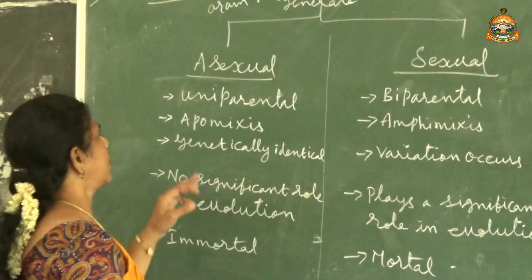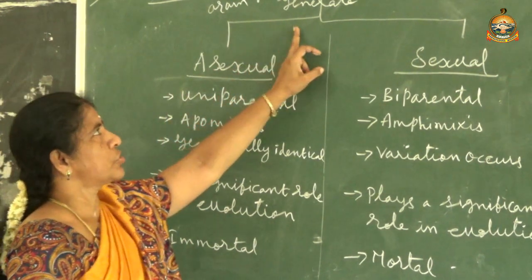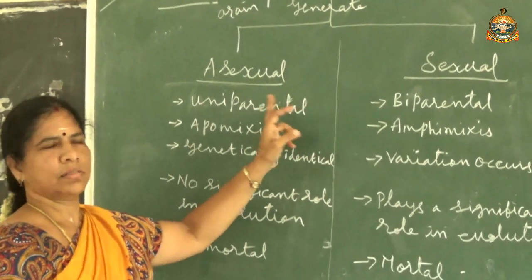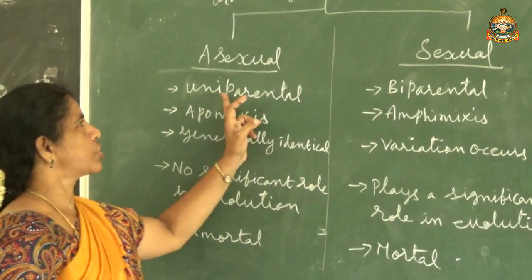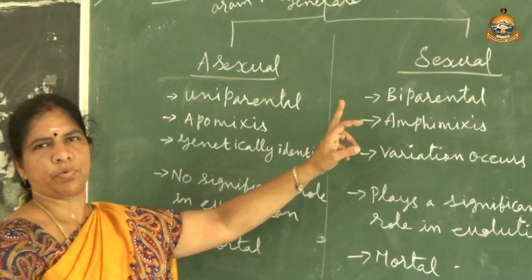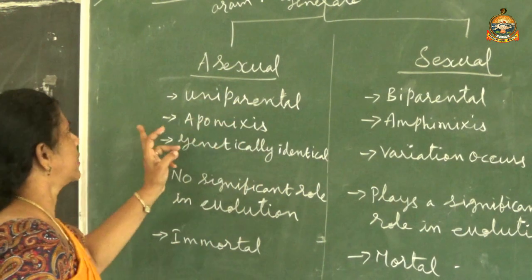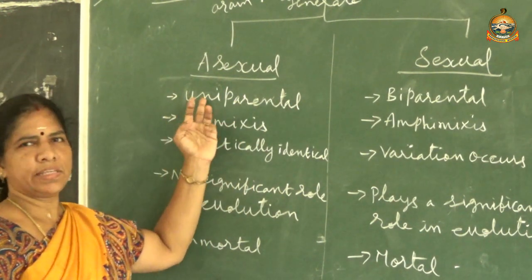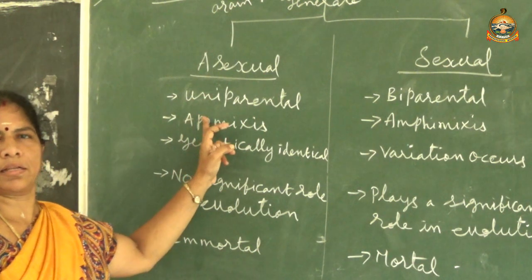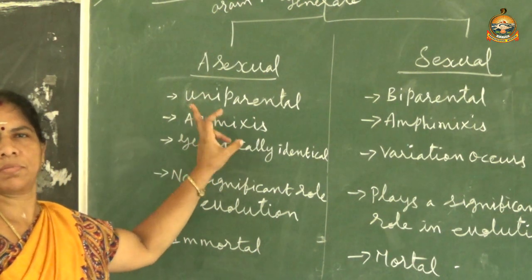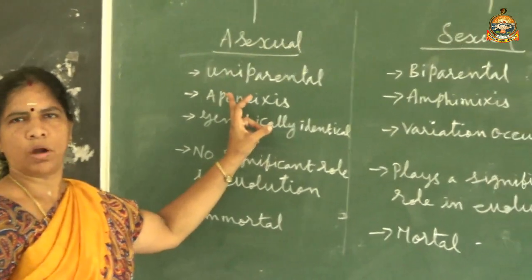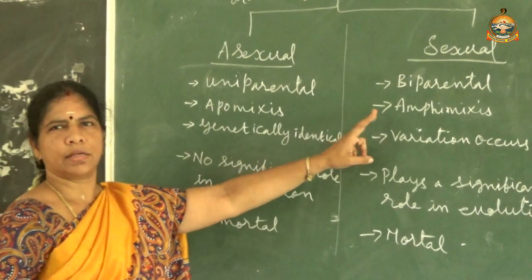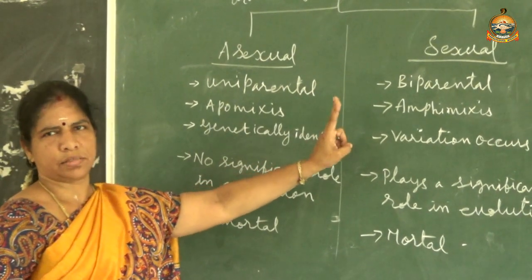Reproduction is divided into two categories: asexual reproduction and sexual reproduction. In asexual reproduction, it is uniparental - meaning a single parent is involved. In sexual reproduction, it is biparental - two parents are involved.